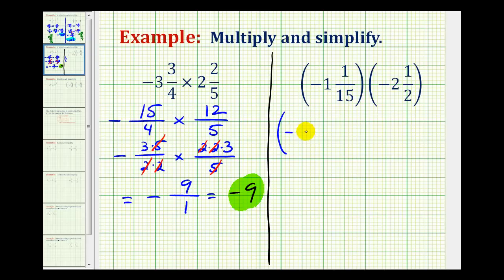First fraction has a denominator of 15, and the numerator as an improper fraction would be 15 times one plus one, which is 16.